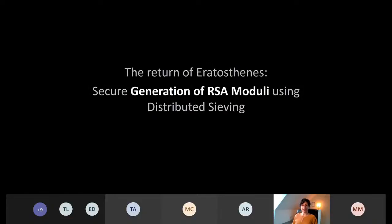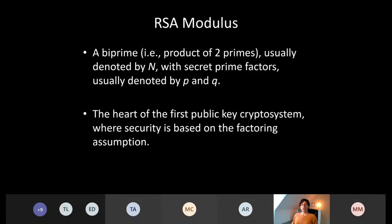Let's start with generation of RSA moduli. An RSA modulus, also known as a biprime, is the product of two prime numbers. We usually denote it by capital N and we want to keep the prime factors secret — we usually denote those by P and Q. These biprimes are essentially the basis of the RSA cryptosystem, the first public key cryptosystem, and many more that followed. Their security is based on the factoring assumption: given a public capital N, it is difficult to find the prime factors P and Q.